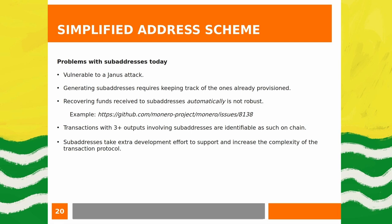Another caveat: when a transaction has 3-plus outputs and uses sub-addresses, that's identifiable as such on-chain — meaning an observer can tell that sub-addresses were used in that transaction. Sub-addresses also take extra development to support and increase protocol complexity, so some wallets still don't implement them for that reason.